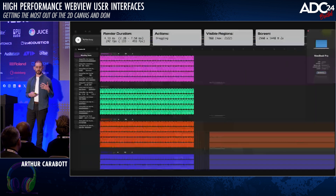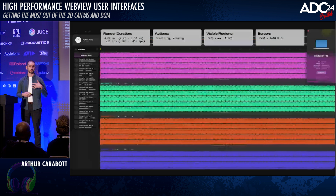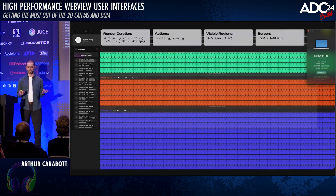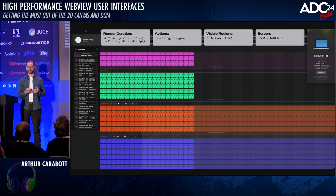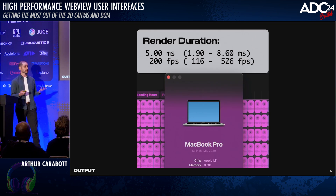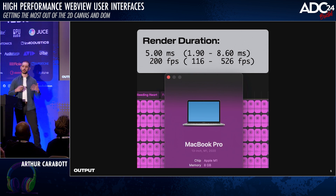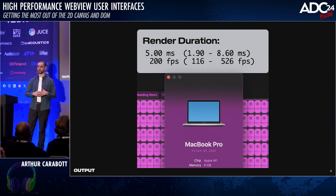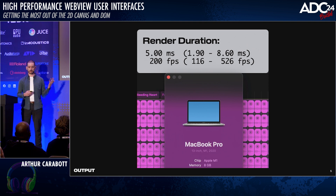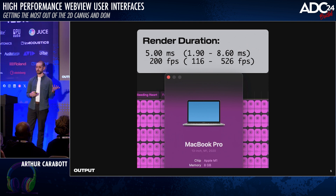This is running on a 2020 13-inch MacBook Pro connected to a 4K monitor. It's a nippy little machine, but it's four years old at this point. We can see with the average rendering, to render an entire frame — rendering everything from scratch — takes about five milliseconds on average, which you could translate to 200 frames per second if the monitor could handle that.